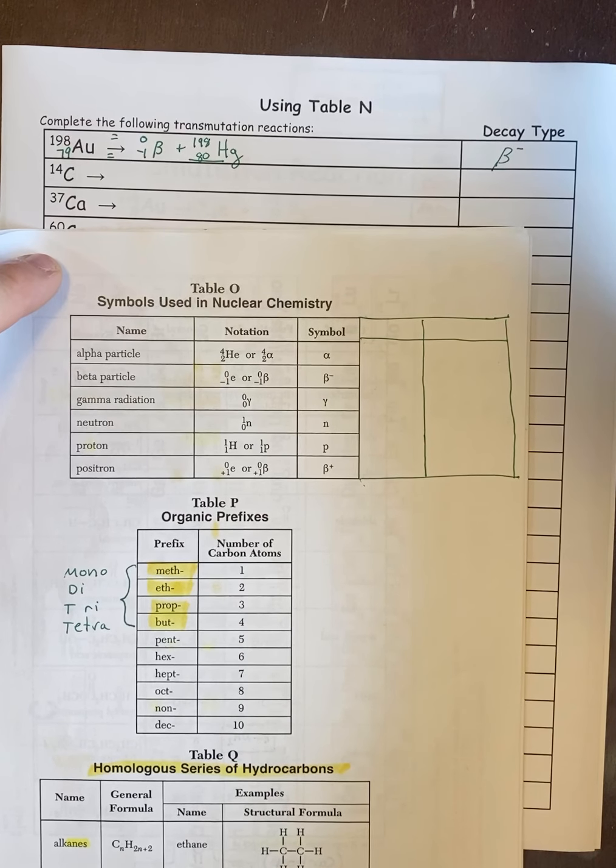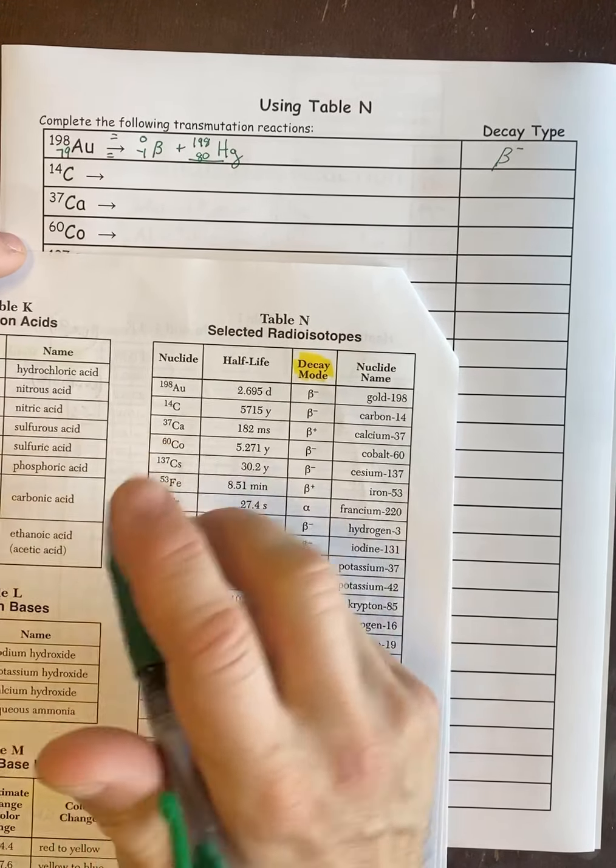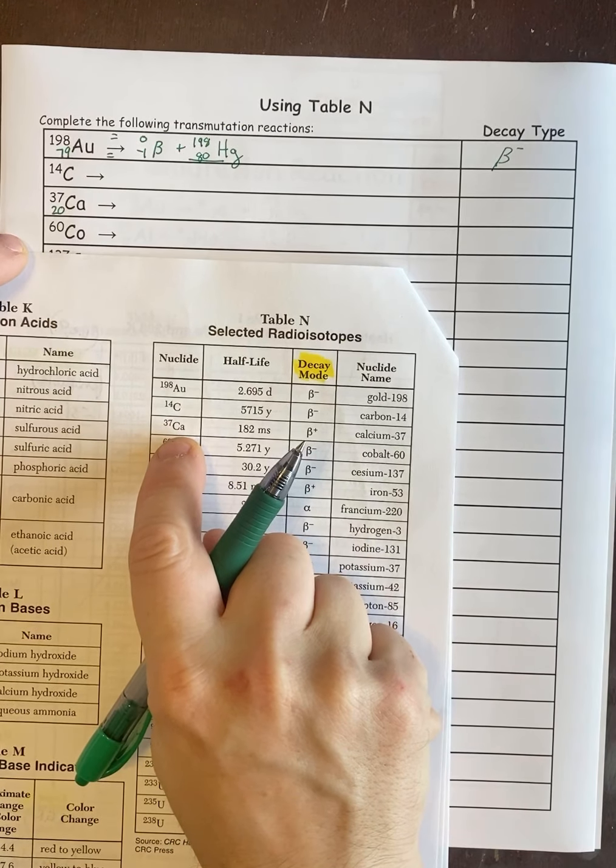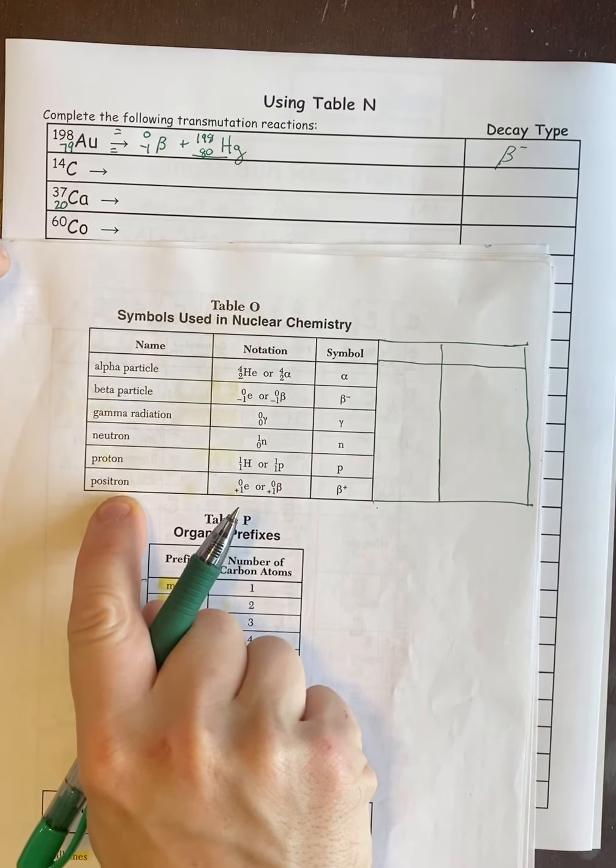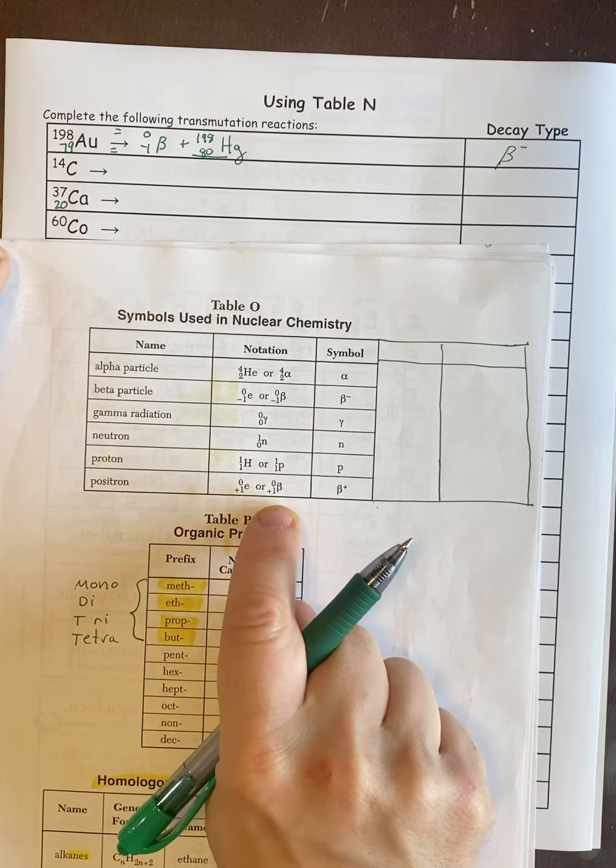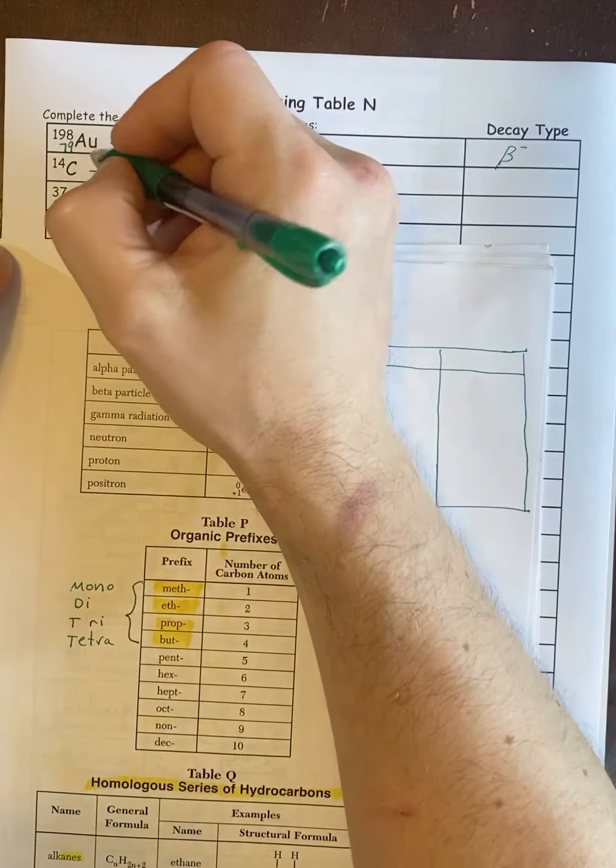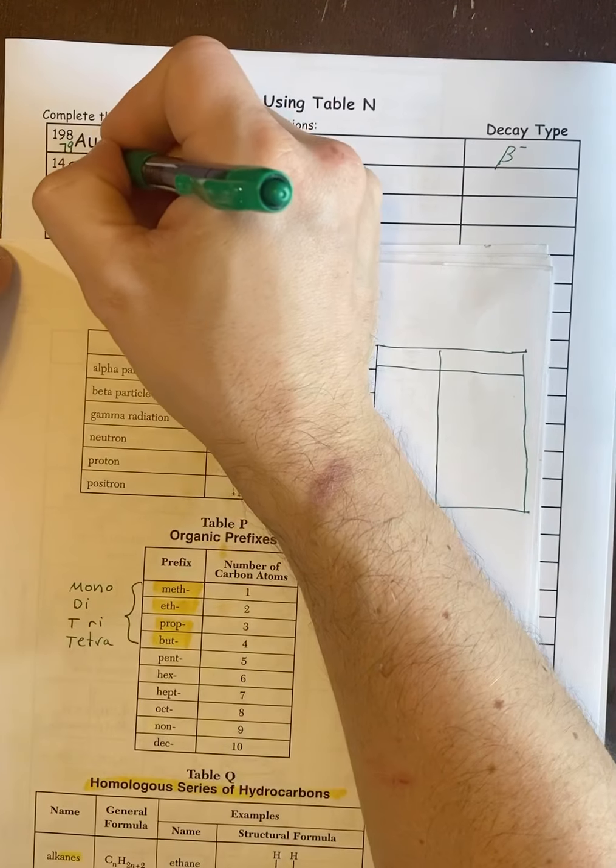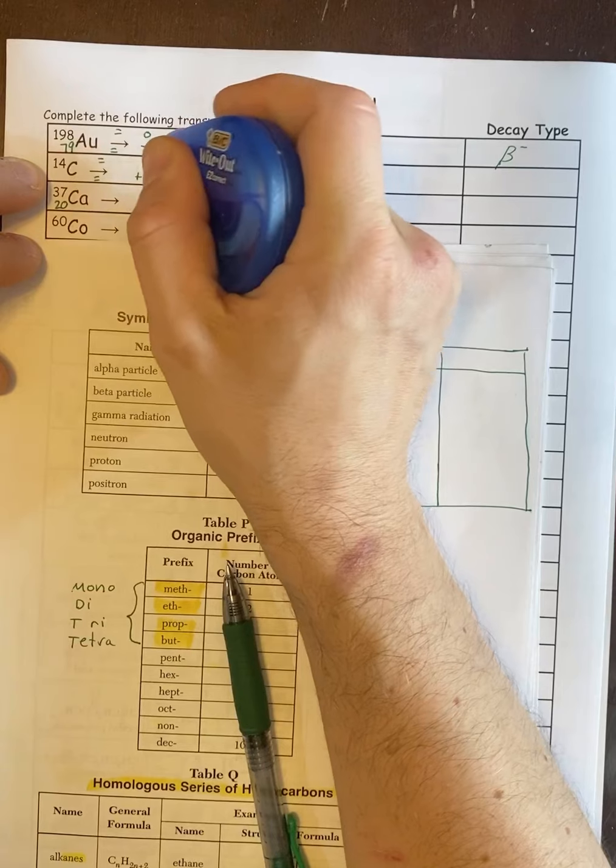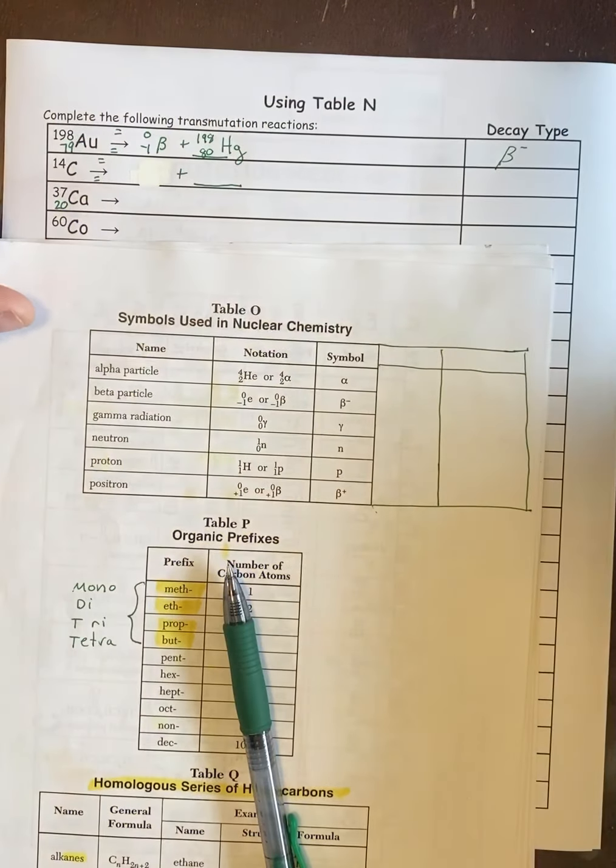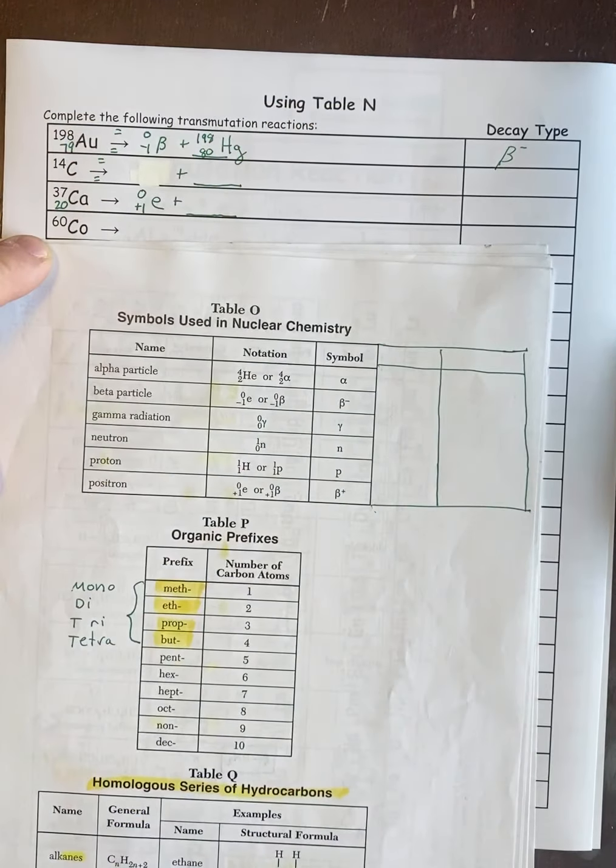I'm going to do one more with you just so you can see a different one. So calcium 37. Its atomic number is 20. So we look that up on the periodic table. Its decay mode is positron. So if you don't know the numbers for positron, we'll go back to table O. And you say, all right, positron is down at the bottom. And I could use 0 plus 1 E or 0 plus 1 with the beta symbol. So I'll use a different one this time. 0 plus 1. I'll use an E symbol instead of the beta symbol just to show you it doesn't matter. Plus the blank. So now the arrow is your equal sign.